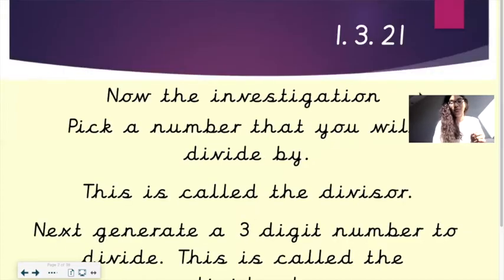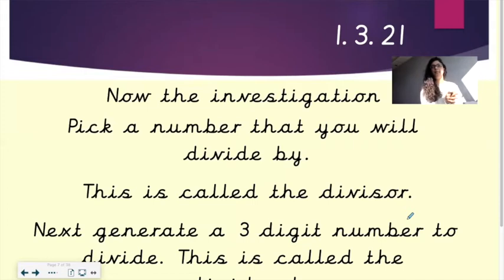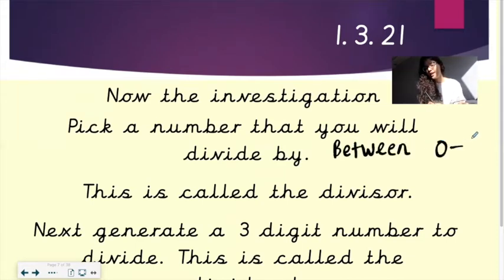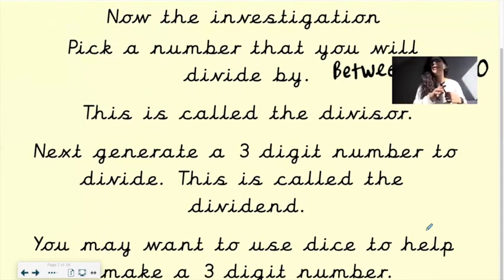Now it is time for the investigation. You need to pick a number that you will divide by. This is called the divisor. So right now, think of a number that you will divide by. And my rule is that it has to be between 0 and 10. So pick a number between 0 and 10 that you will divide by, and write that number down for me. Then you are going to generate. Generate means to create a three-digit number to divide. Now this is called the dividend.